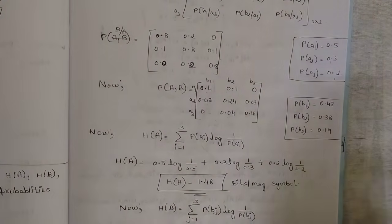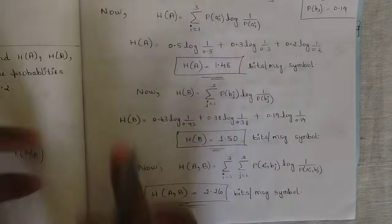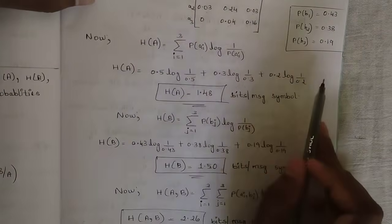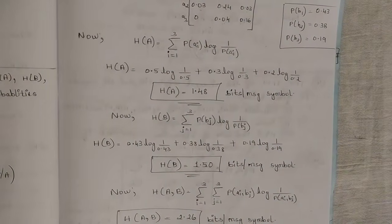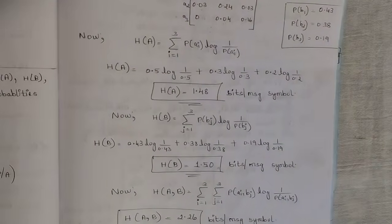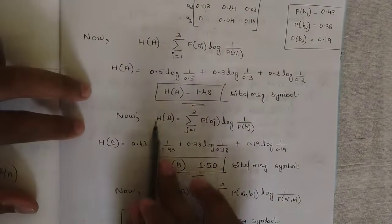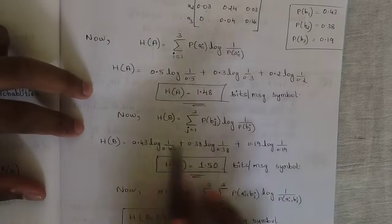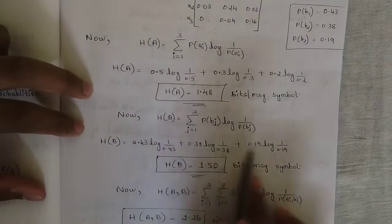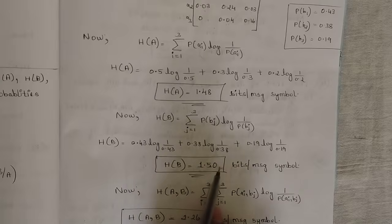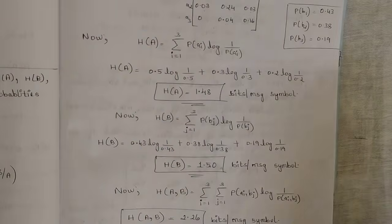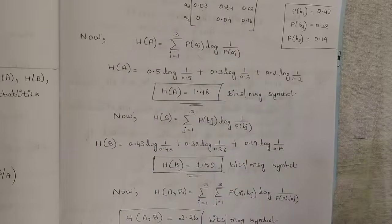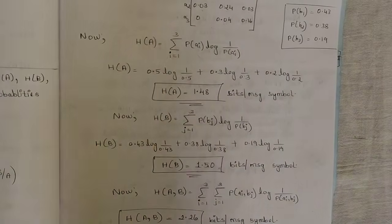Now put the probabilities into the entropy equations to solve H(A) and H(B). H(A) = summation of P(Ai) × log(1/P(Ai)); splitting the summation gives the answer as 1.48 bits. H(B) = summation of P(Bj) × log(1/P(Bj)); splitting the summation gives H(B) = 1.5 bits. Please pause the video, verify using a calculator, and let me know in the comments if there's any mistake.